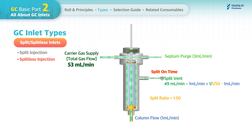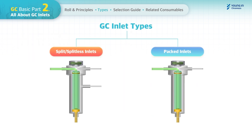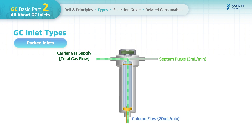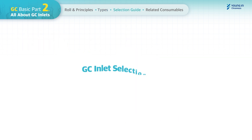The packed column inlet design is simple: the entire carrier gas enters the column after subtracting the septum purge flow. For example, if column flow is set to 20 mL/min, the total will be 23 mL/min. After gas flow stabilization, the sample is introduced to the inlet liner and the entire sample is loaded into the column. Depending on the GC manufacturer, the septum purge line may not be available.